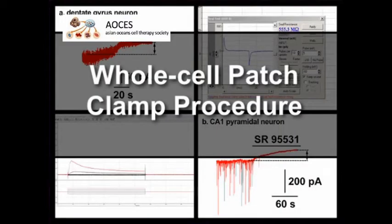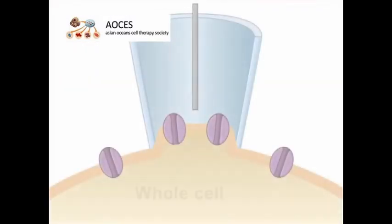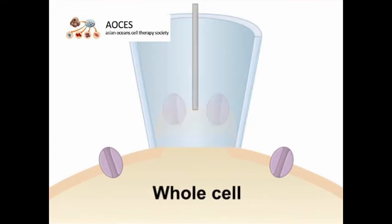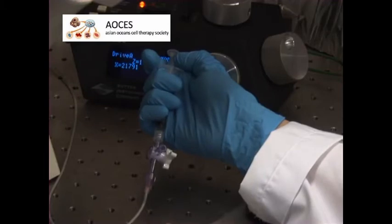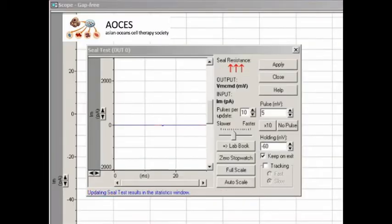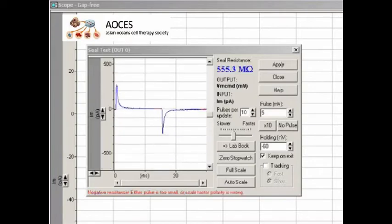Now that a cell-attached configuration has been established, let's convert to a whole-cell configuration and do an experiment. Recall that a whole-cell configuration is when the membrane is ruptured. Rupturing is accomplished by adding negative pressure to the micropipet. Once the membrane breaks, the test pulse shape will have large current transients, as the cell membrane is now acting as a capacitor, which is charged by the test pulse.